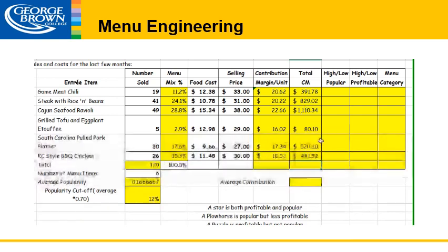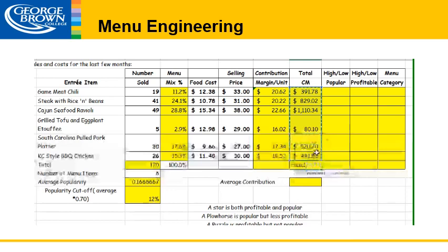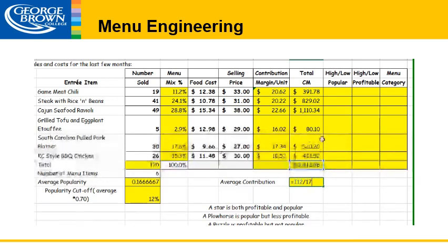Now that we've done that, we can calculate our average contribution. If we add up all the contributions from each item, we get a total overall contribution of $3,412.96. We take that and divide it by the number of items sold, which is 170, to get an average contribution of $20.08. So now we have an average popularity and an average contribution, and we can determine whether each item is high or low with respect to those things.